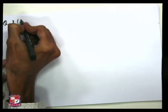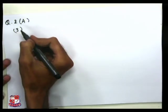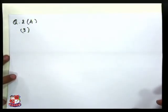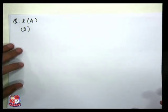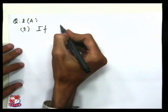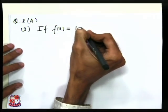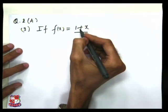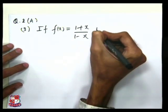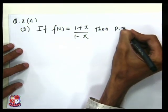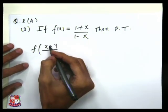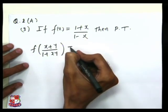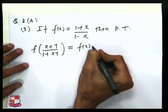Let us try to solve example number 3 of question 2A. We are solving this paper with options, so this is the 3rd question of 2A, which is from the functions chapter. The question is: if f(x) = (1+x)/(1-x), then prove that f((x+y)/(1+xy)) = f(x) · f(y).